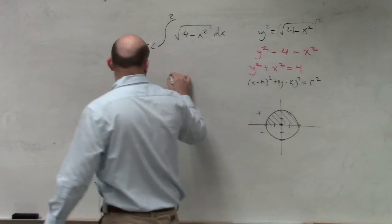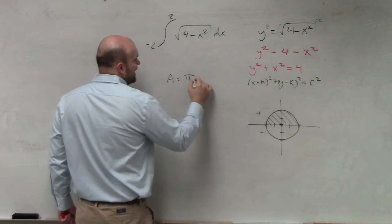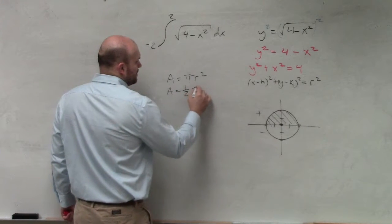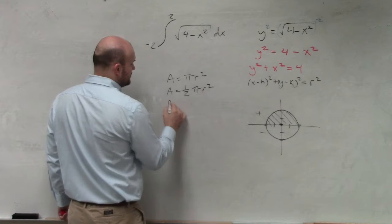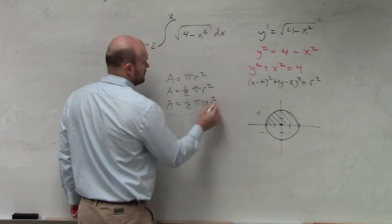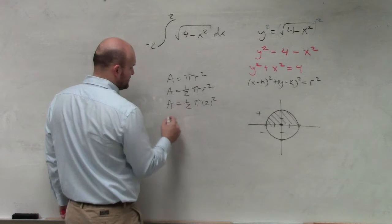So if we know the area of a circle is pi r squared, we're only doing half of a circle. We know that r is going to be 2, so that's 4, and 4 times one half is going to be 2 pi.